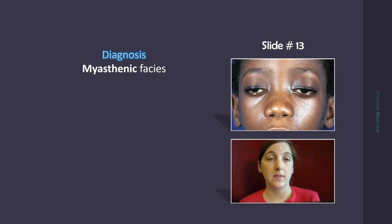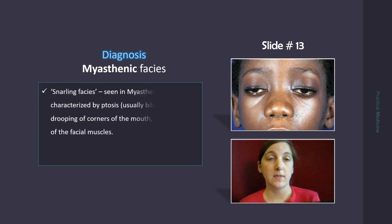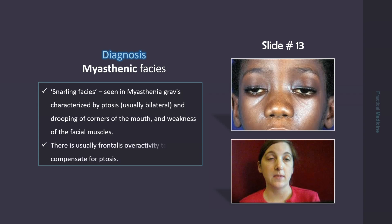This is myasthenic facies, typical of myasthenia gravis, also known as snarling facies. It is characterized by ptosis, which is usually bilateral. There is drooping of corners of the mouth and weakness of the facial muscles. There is usually frontalis overactivity to compensate for ptosis.